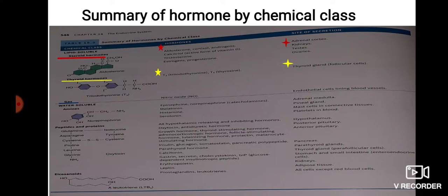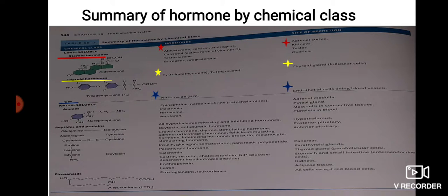The main functions of nitric oxide are to help in vasodilation by dilating blood vessels and lowering blood pressure. It also helps in the erection of the penis in males. Among water-soluble hormones, the amines include epinephrine and norepinephrine.